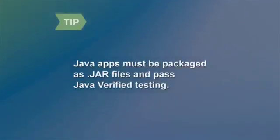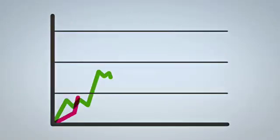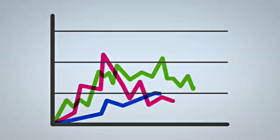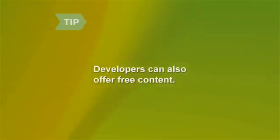If you're submitting a Java application, it must be packaged as a JAR file and pass Java Verified testing. Step 5. Choose your price point from among numerous predefined prices set by Nokia. Prices may be displayed in a number of local currencies, depending on the territory. The publishing channel provides real-time sales data to monitor the popularity and sales of your applications and content on OviStore. You can also offer free content on OviStore if you want to do so.